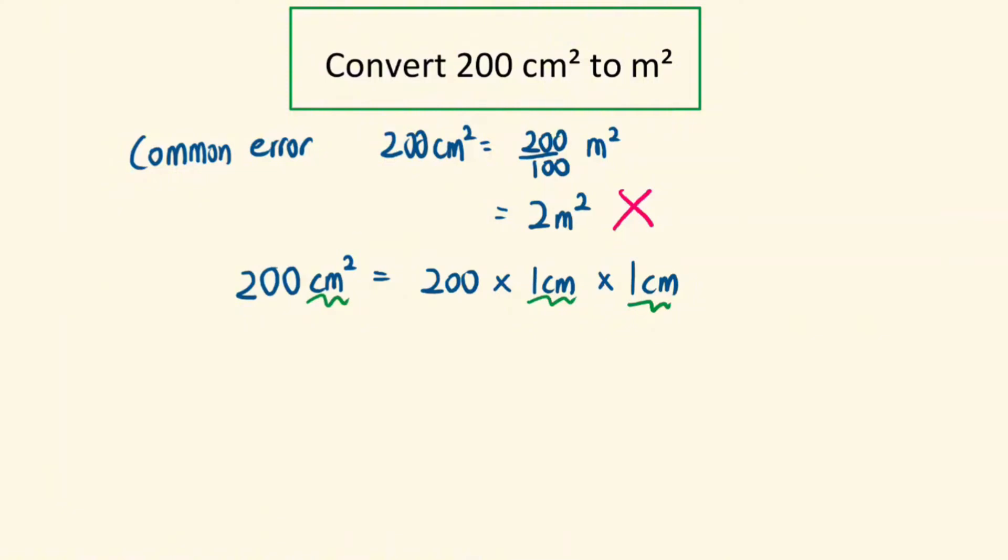Then next, we can individually convert each of the 1cm to m. So if you recall, 100cm is 1m. So if you divide both sides of the equation by 100, you will get 1cm equals to 1 over 100 m.